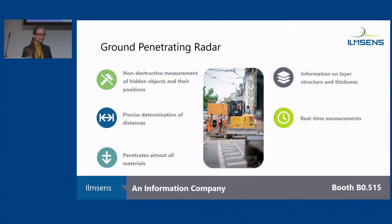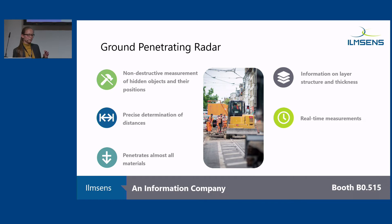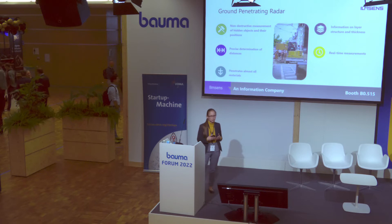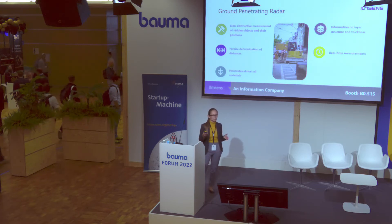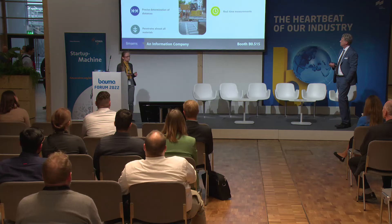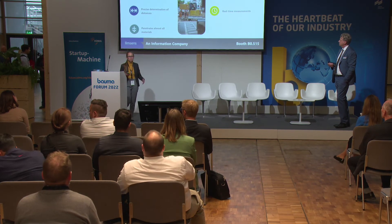Now let's go on to ground penetrating radar. Ground penetrating radars do non-destructive measurements of the ground and soil to detect hidden objects, determine them, and get their distance to the surface. One application we have a lot of measurement data on is measuring the thickness of an asphalt layer. We can measure distances with high precision thanks to the wide frequency range we use — zero to six gigahertz — where higher bandwidth gives better distance resolution. Using a low frequency range allows us to penetrate almost every material, up to a few meters deep, and we can do real-time measurements.